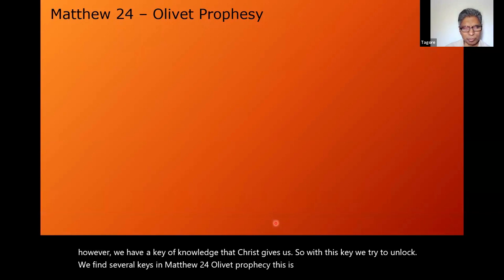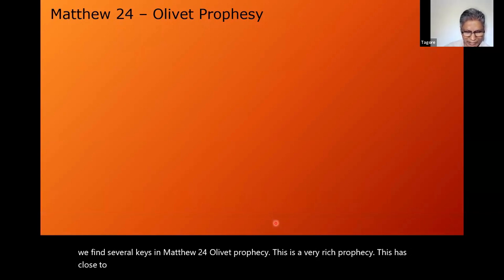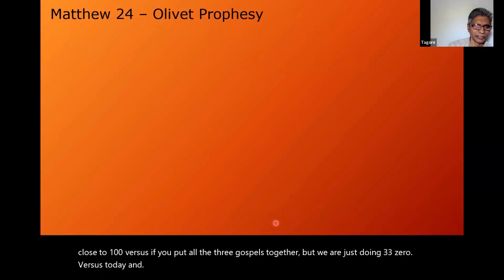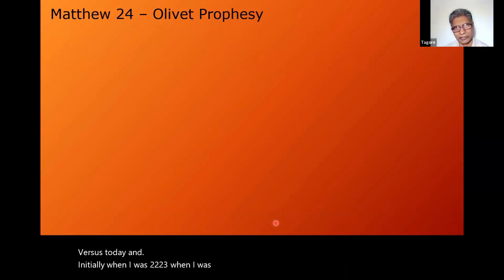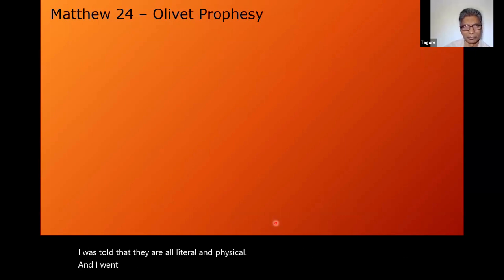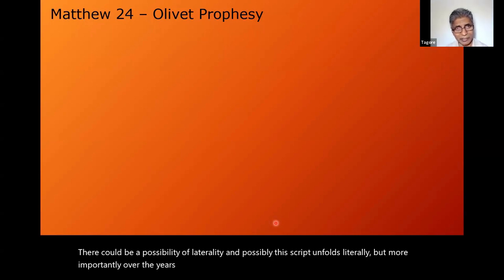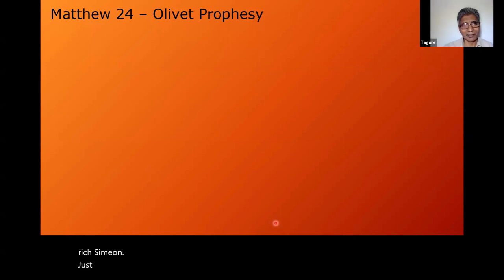We find several keys in Matthew 24, the Olivet Prophecy. This is a very rich prophecy — close to 100 verses if you put all three Gospels together, but we are just doing about 33 verses today. Initially when I was 22 or 23, a fresh kid in the Worldwide Church, I was told they are all literal and physical. Over the decades I began to see a very rich semeion — a very, very rich semeion that just unlocks itself into a huge body of teachings in these verses. The Olivet Prophecy is a mega prophecy with so much information jam-packed and compressed in the style of semeion.